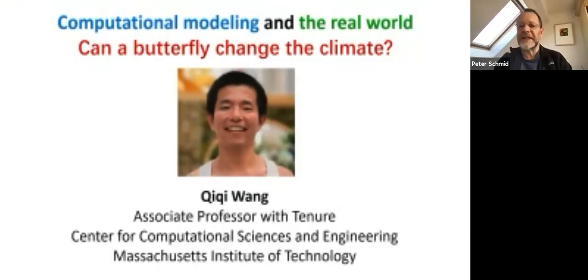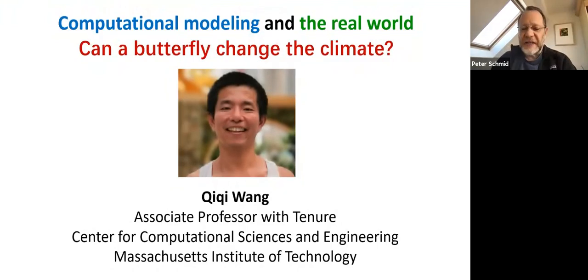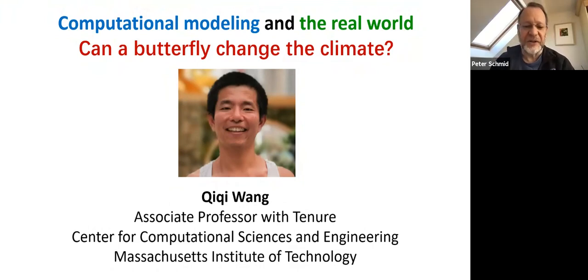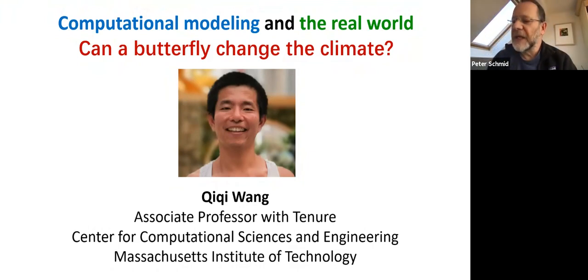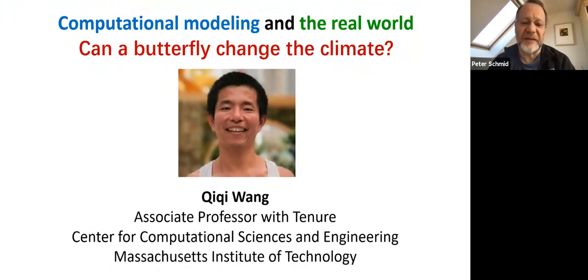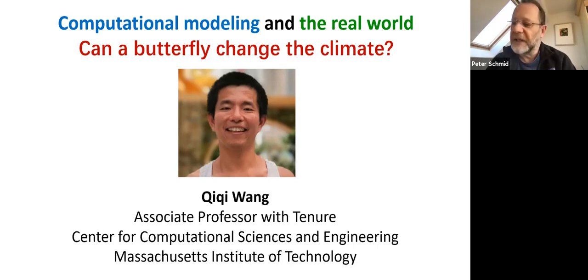The people are still trickling in a little bit, but let's get started. Thanks for coming and for that fluid seminar outside the usual time slot on Friday. It's a special pleasure to have Chi-Chi Wang today. Chi-Chi is an associate professor at MIT in the Aero Department, and he got his PhD at Stanford as one of the first graduates of the then newly established Institute for Computational Mathematics and Engineering.